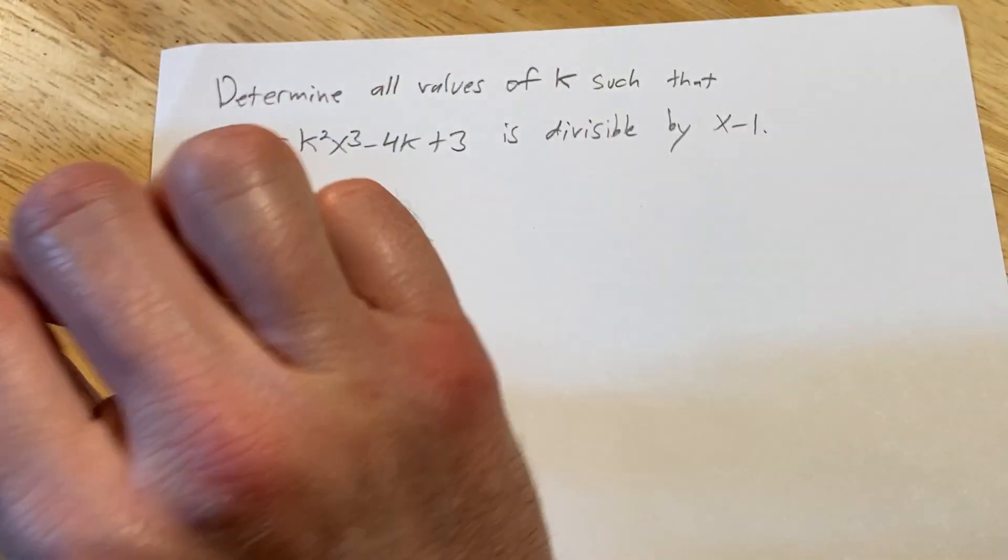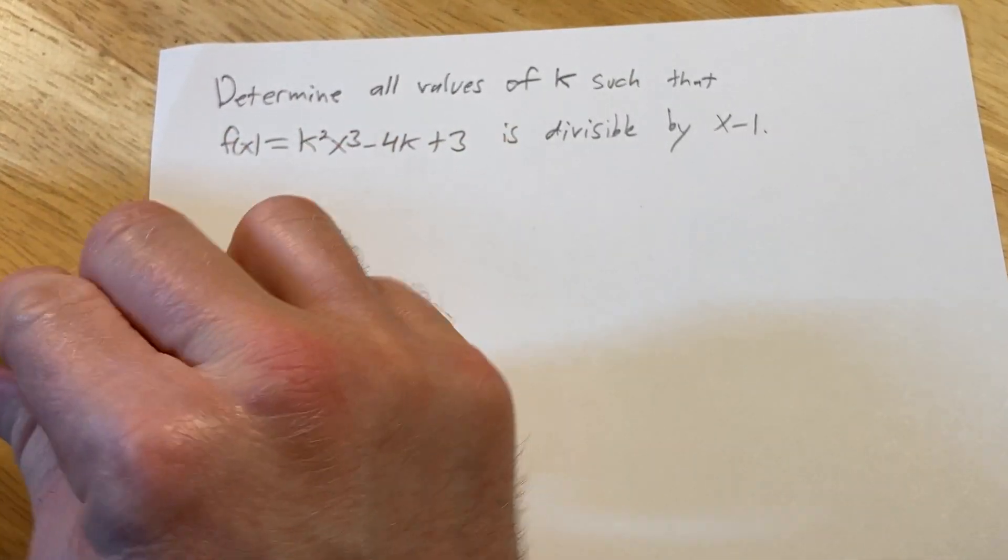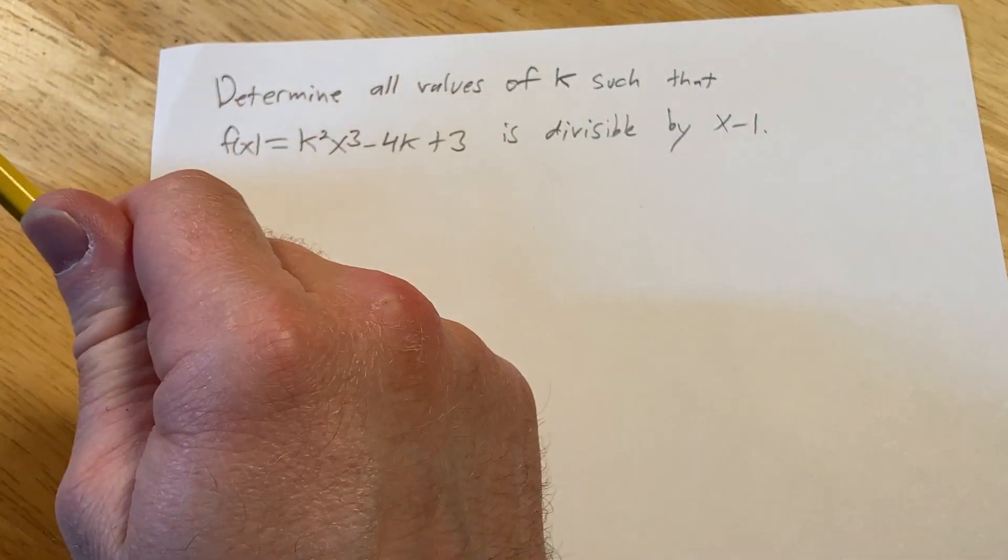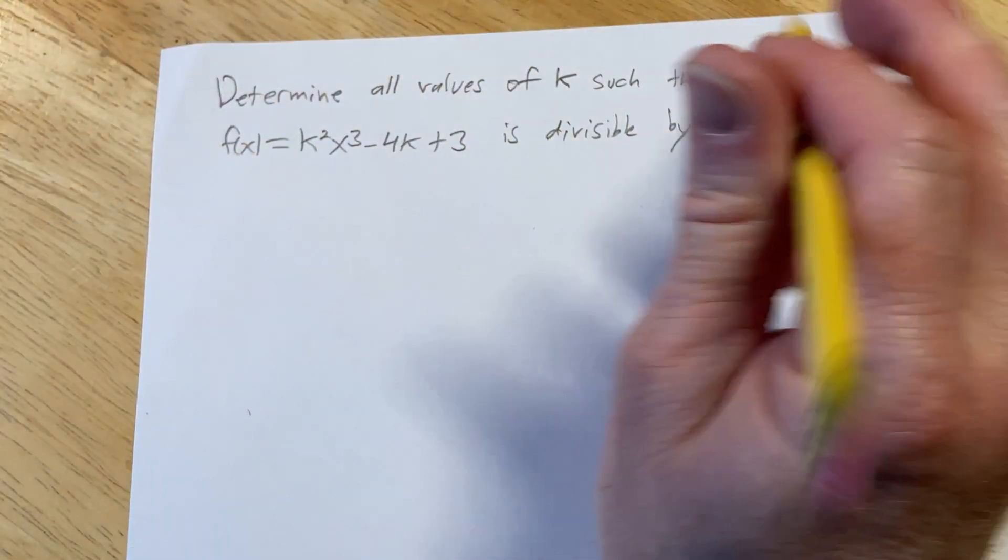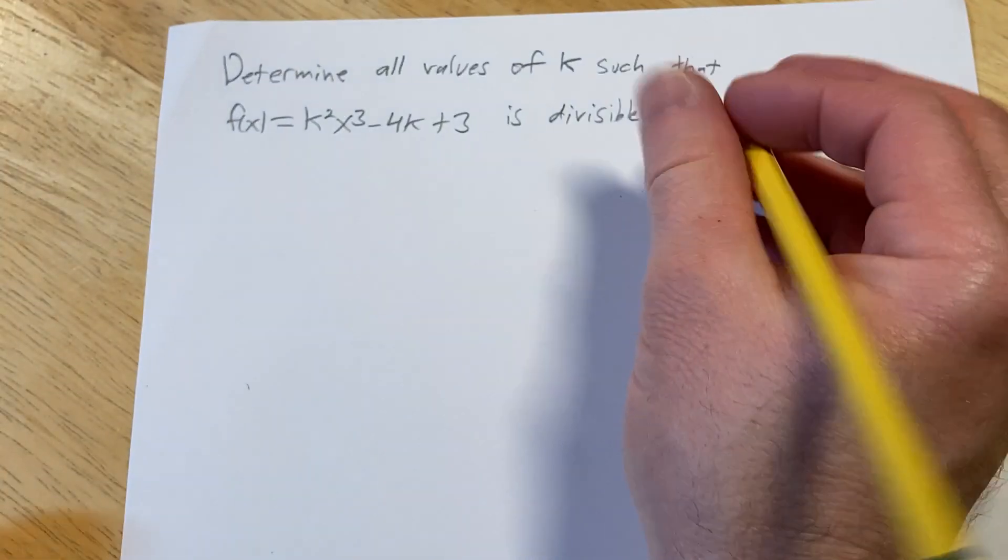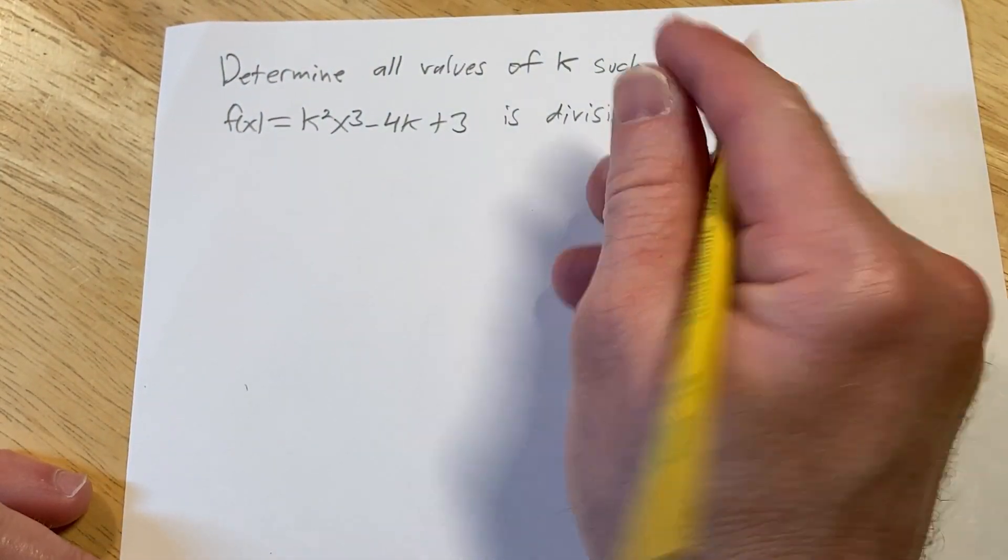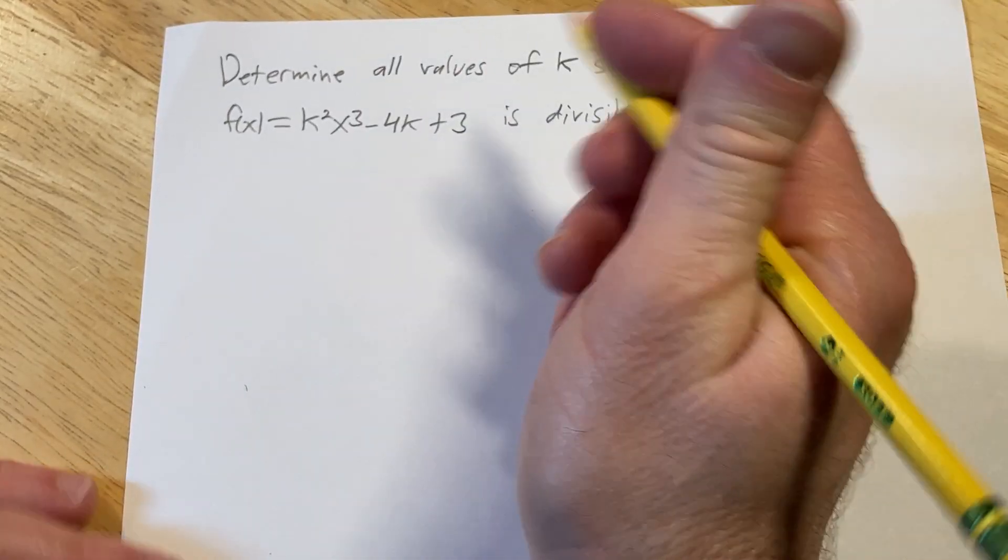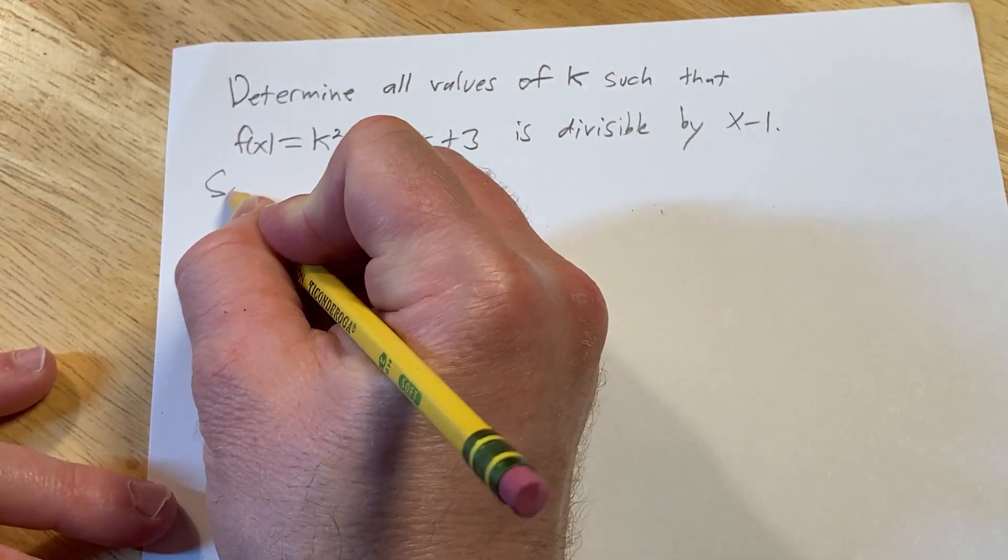So that's what we're going to do. We're going to divide it by x minus 1 using synthetic division and force the remainder to be 0 because that would mean it's divisible. We'll use synthetic division, look at the remainder, force it to be 0, and then see if that gives us a solution for k.